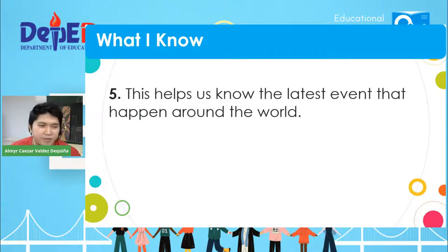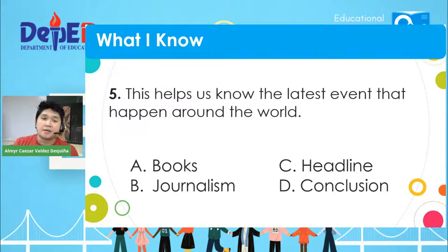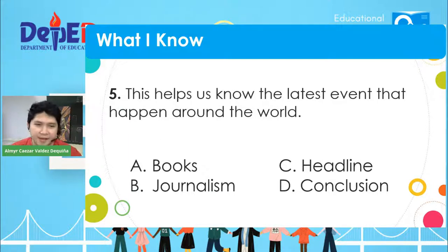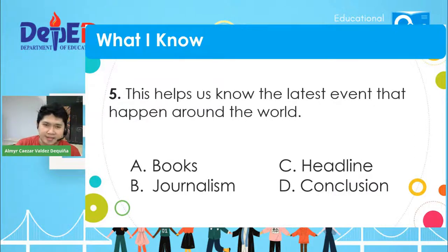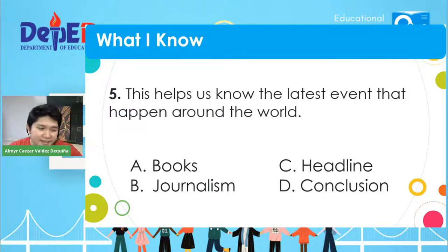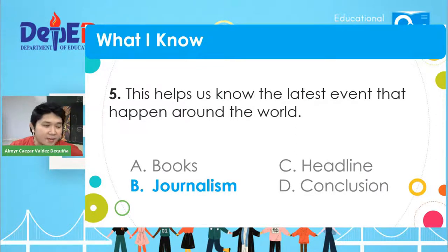Number five: This helps us know the latest event that happened around the world. Choices: A) books, B) journalism, C) headline, D) conclusion. Ang keyword natin dito ay 'latest' — pinakahuling pangyayari. Where can we usually get that? The correct answer is letter B — that's journalism.